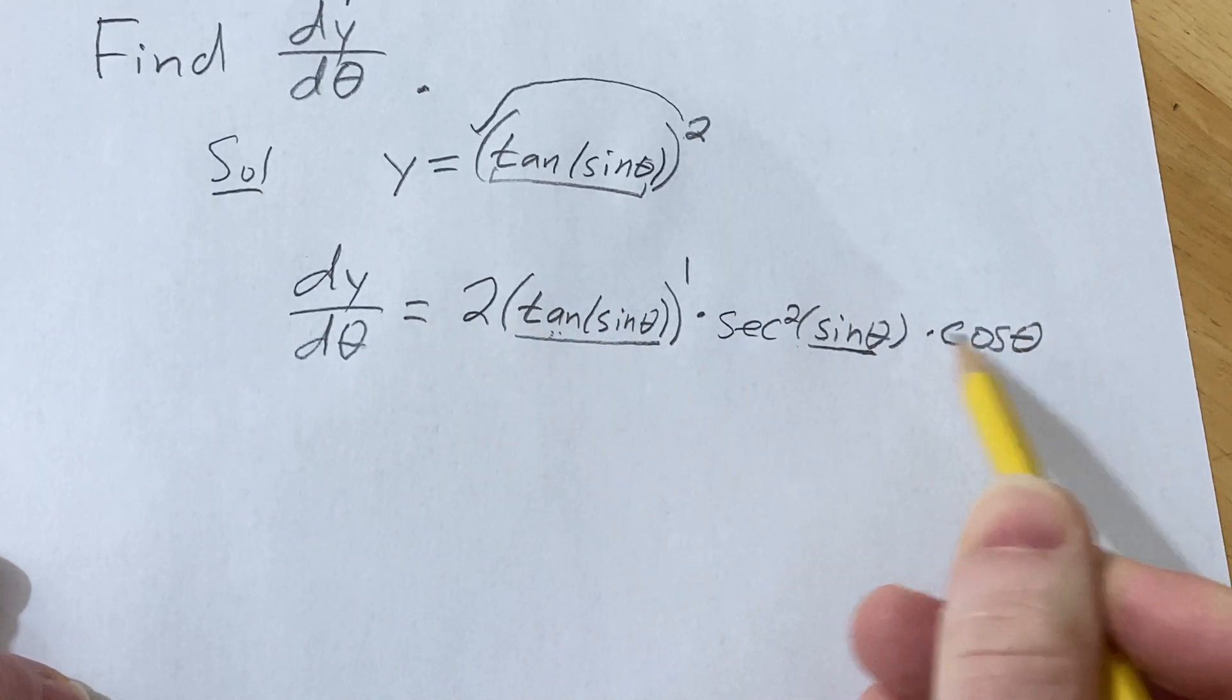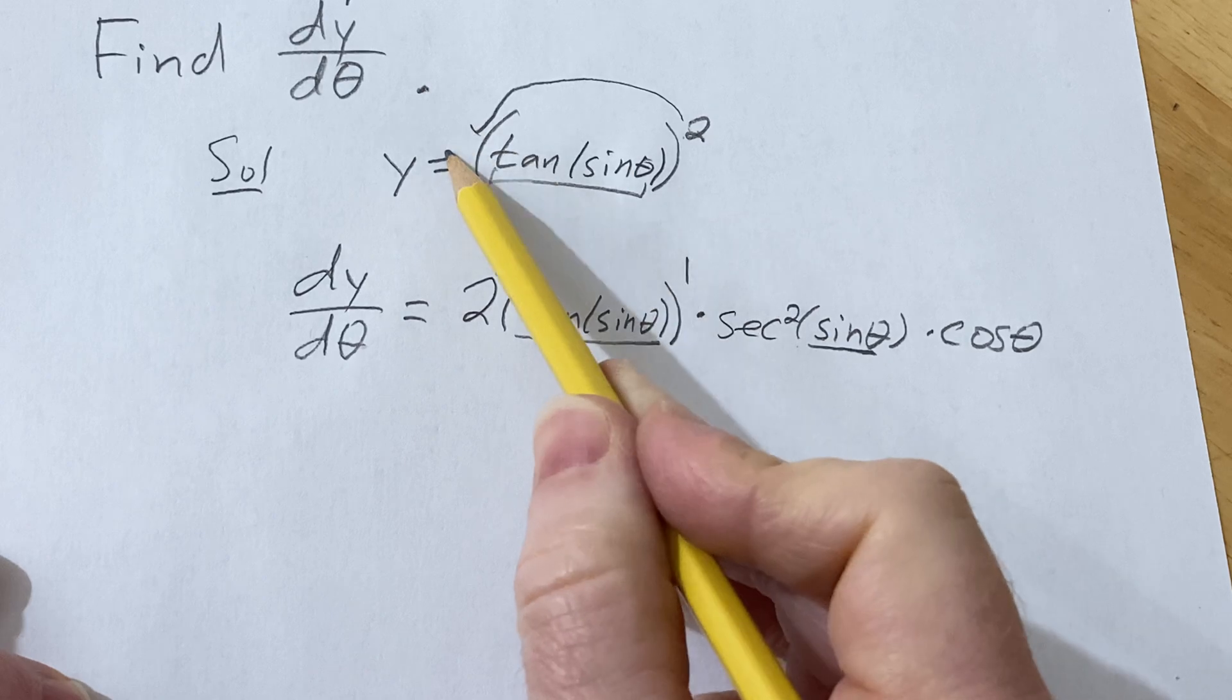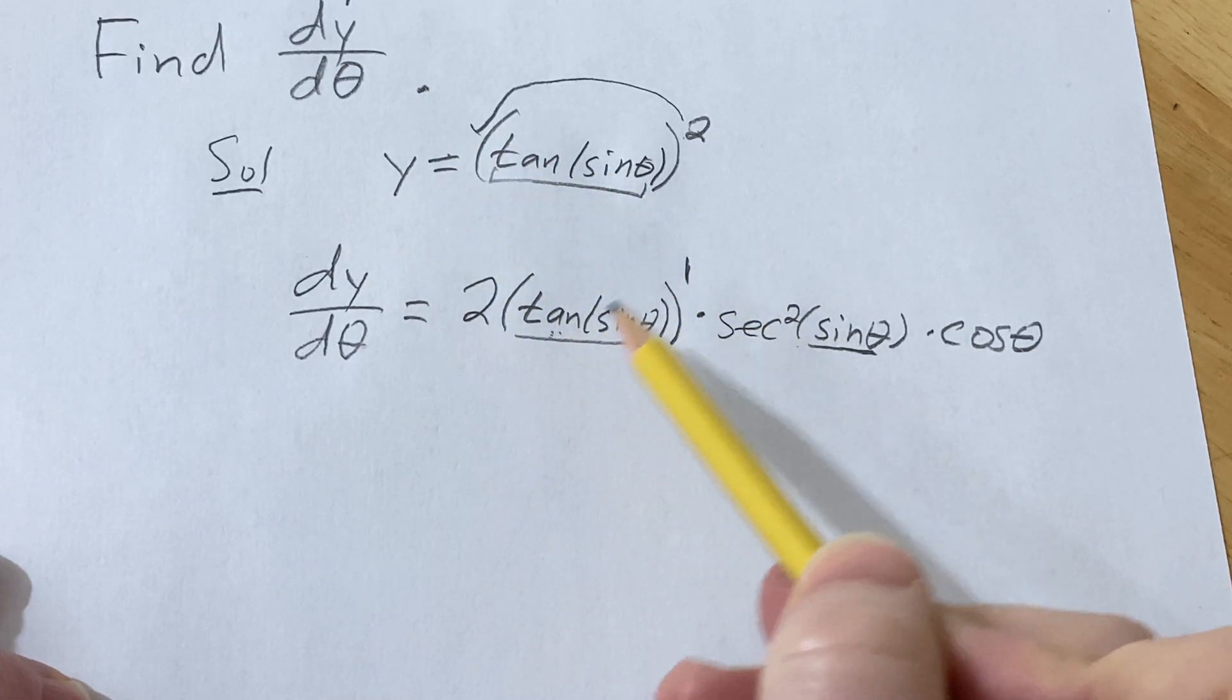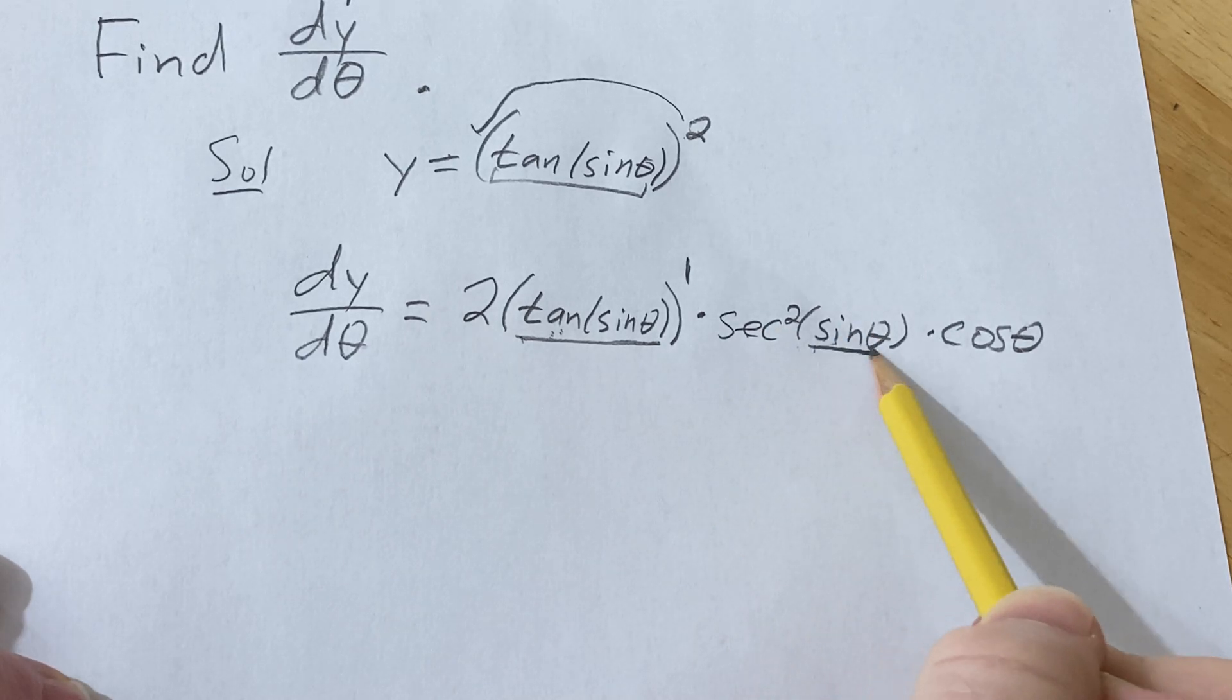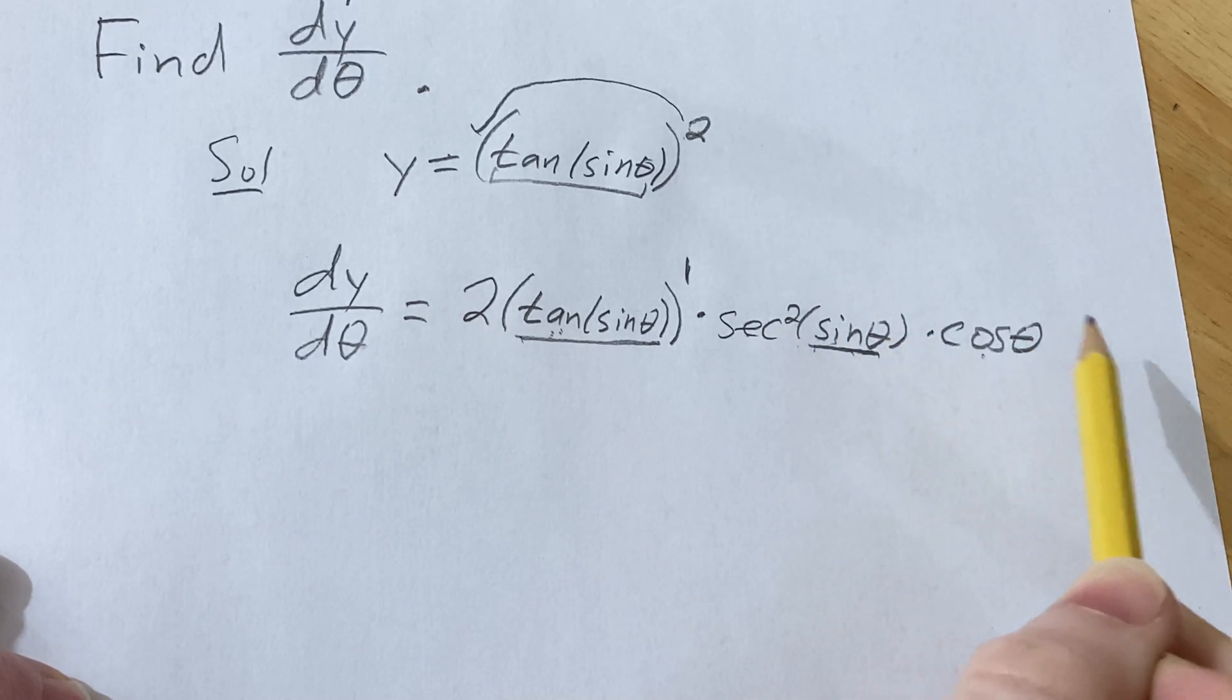So it's just multiple applications of the chain rule. You bring down the two, subtract one from the exponent, then you go to the inside function. Derivative of tan is secant squared sine theta. Then you go to the inside function. Derivative of sine is cosine theta, and then you're done.